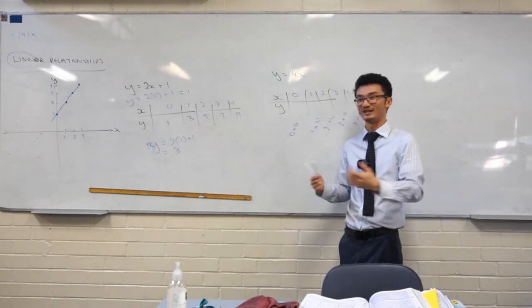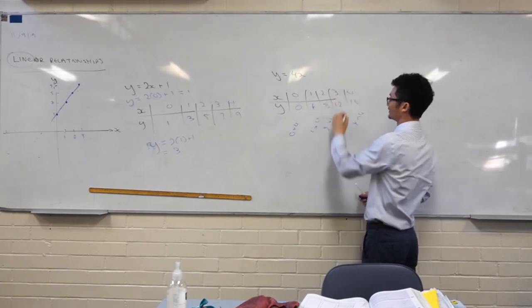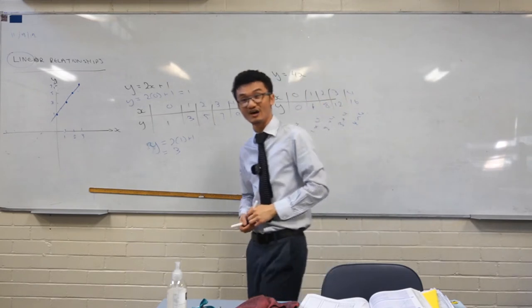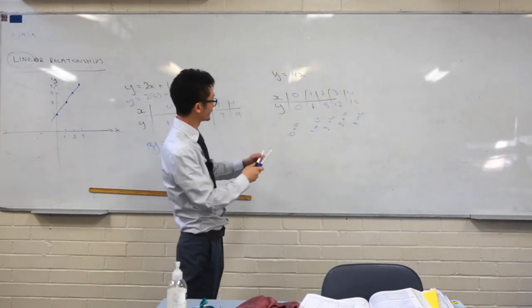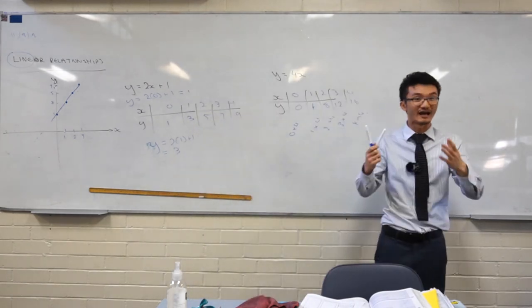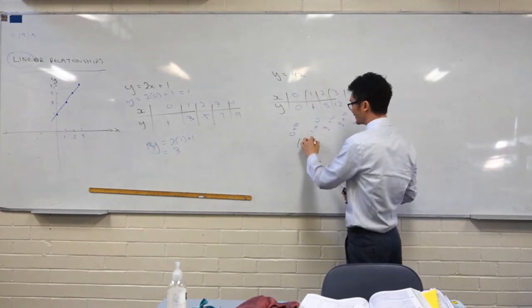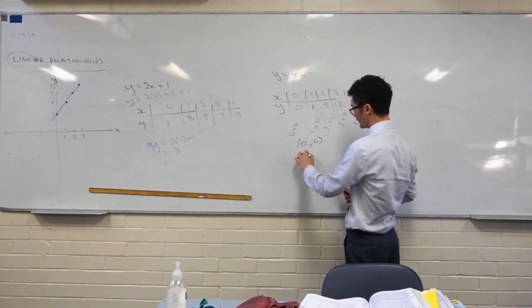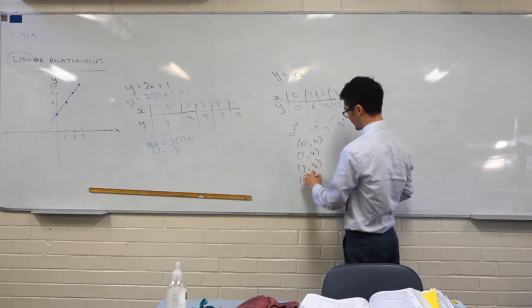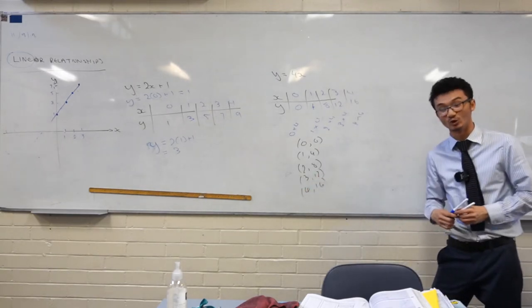That's really just your 4 times tables, isn't it? You've got 0, 4, 8, 12, 16. The important thing though is that if you're asked to graph this, that you recognize that these are your x values and these are your y values. So you could actually write them out as what we call ordered pairs. You could write these would all be points along the line. That's how we connect them all up.